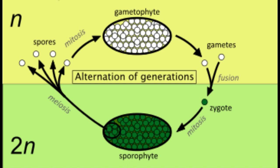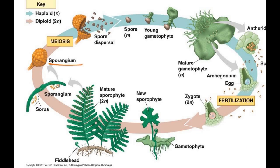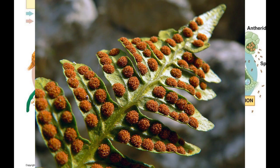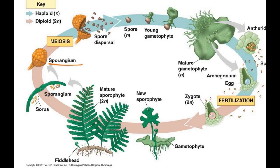In the beginning of reproduction, the fern starts with producing spores in the haploid stage. Spores are held in the sporangia, which are little dots at the back of the fern. This is the place where meiosis happens to give rise to haploid cells.